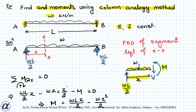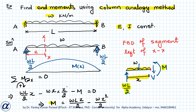The bending moment diagram will be parabolic with maximum at the midpoint, and the equation of the bending moment diagram is Mx = wLx/2 − wx²/2. The next step is to draw the analogous column for this beam.